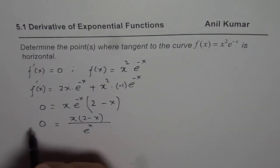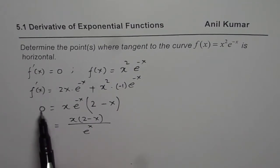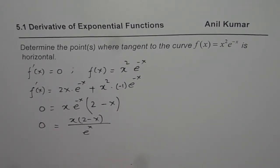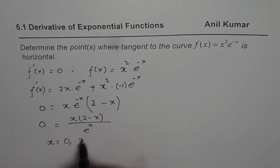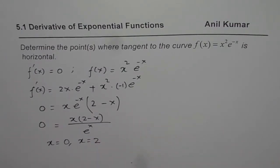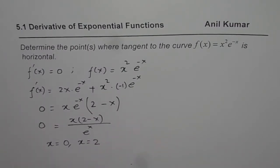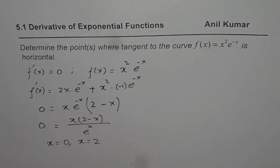Now, for horizontal line, the derivative should be 0. So that is why we equate this to 0 and this derivative is 0 for 2 values of x. That is when x equals 0 or x equals 2. You get this by equating the numerator as 0.